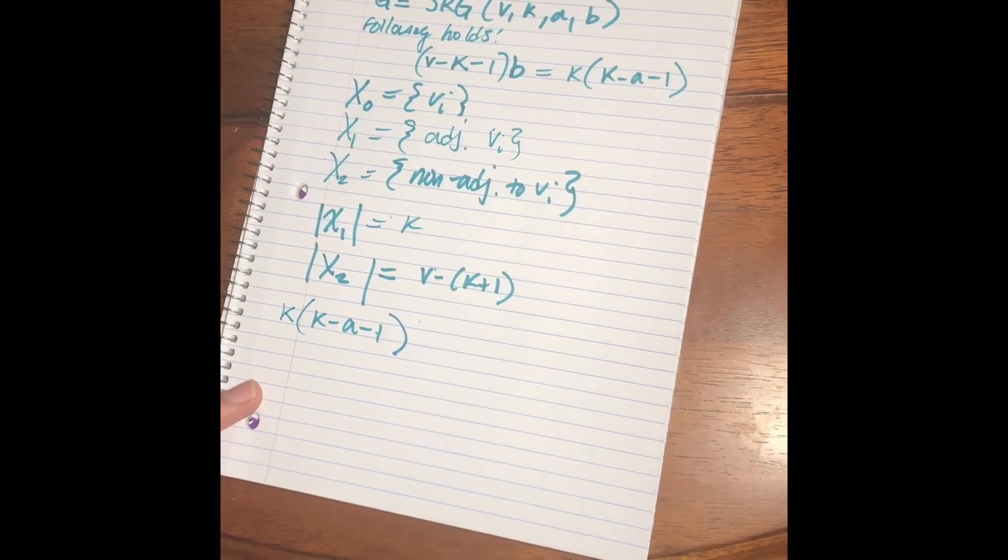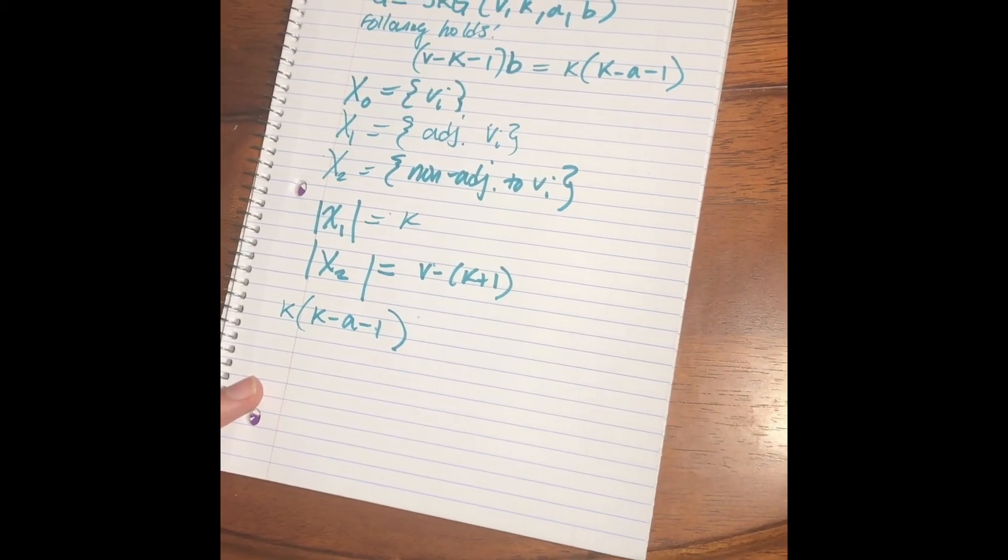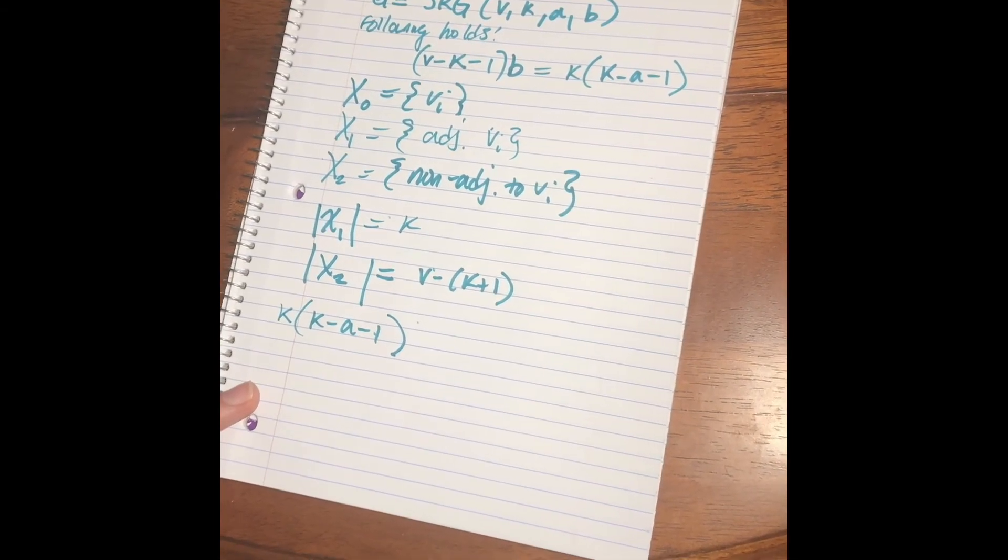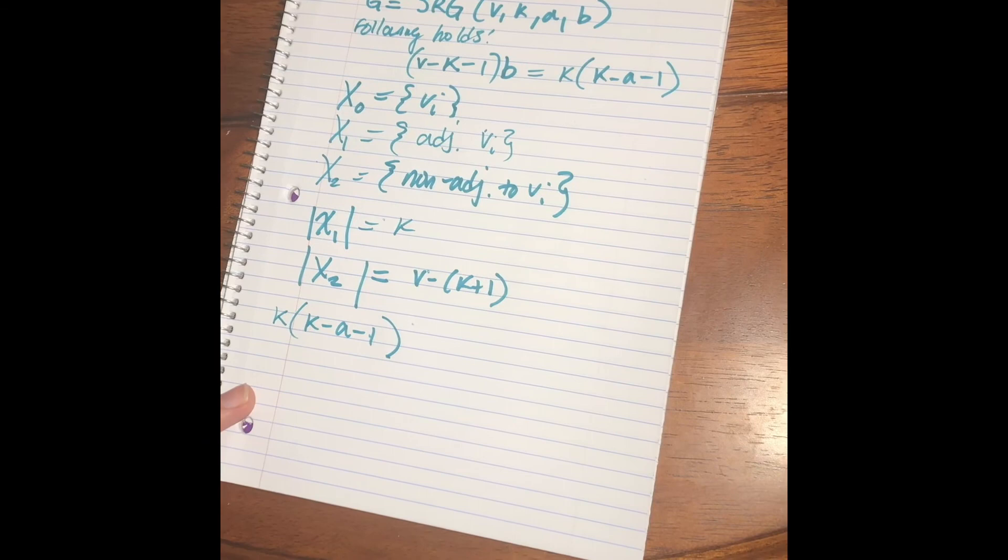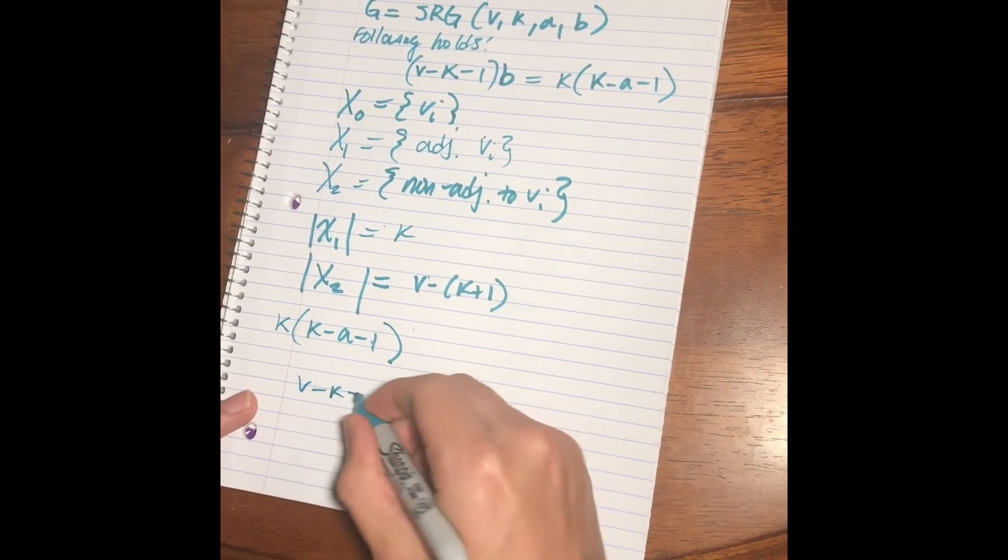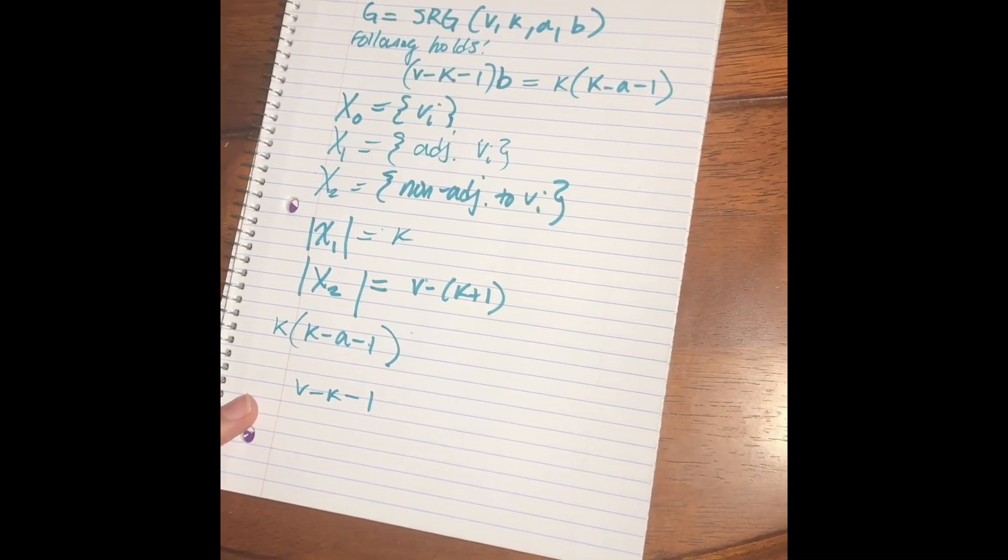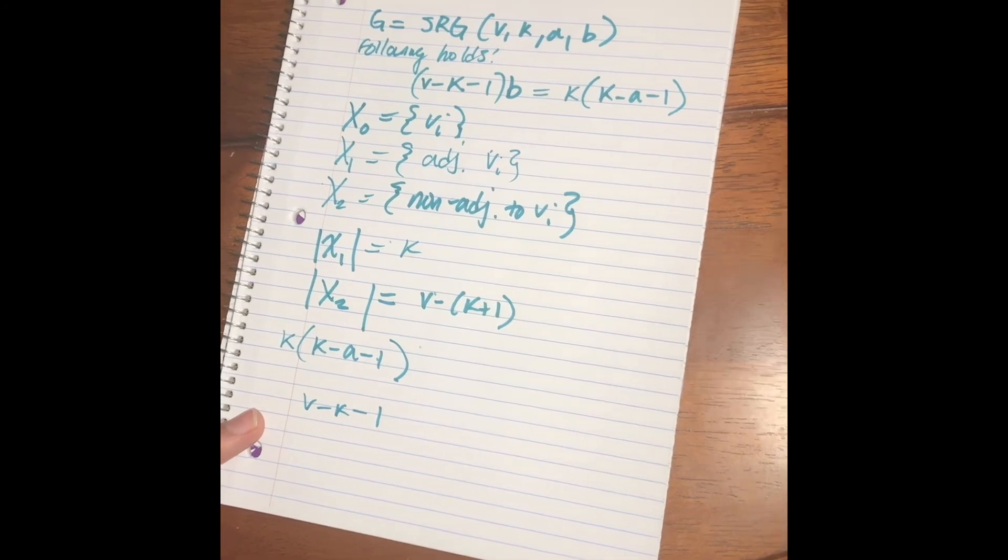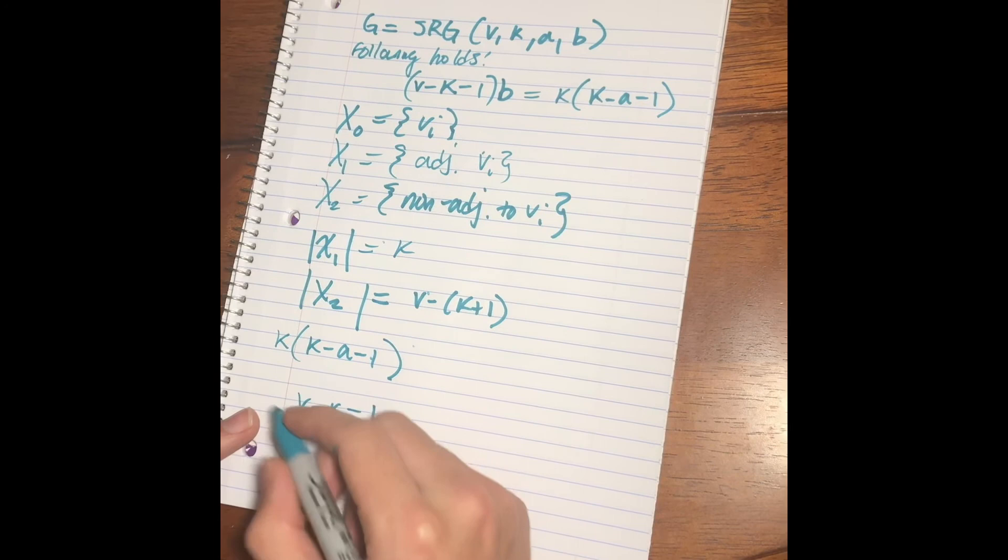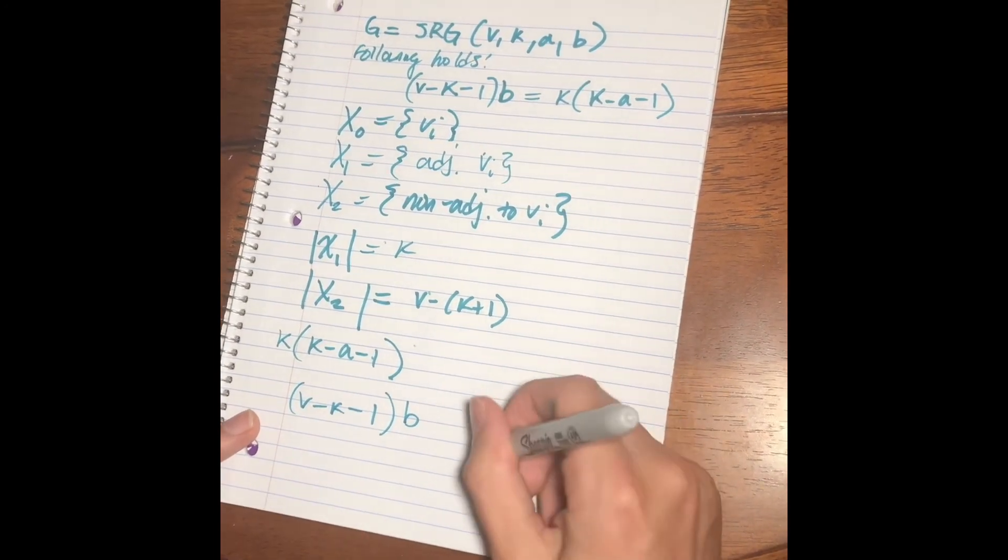Now, we count the edges starting from x2. All the vertices in x2 share b neighbors with vi. These neighbors must be in x1 since they are adjacent to vi. Thus, since we have v minus k minus 1 vertices in x2, we see the number of edges running between x1 and x2 is that number times b, and that's the proof.